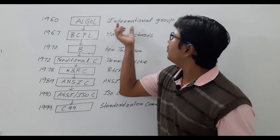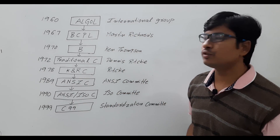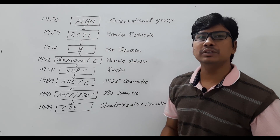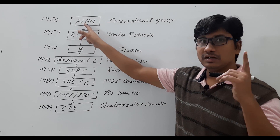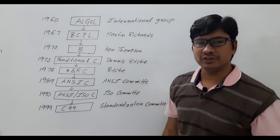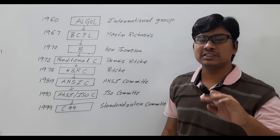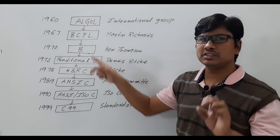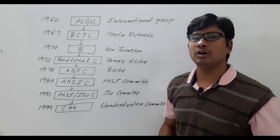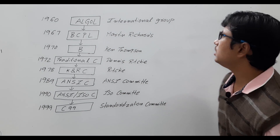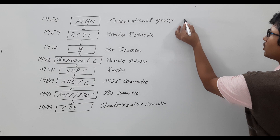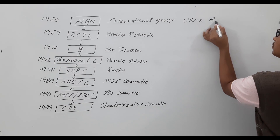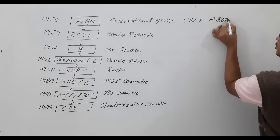In the 1960s, an international group designed a programming language called ALGOL. This is the first structured programming language, and since C is also a structured programming language, ALGOL is considered its earliest ancestor. This programming language was never famous in the USA but it was widely accepted in the European countries.